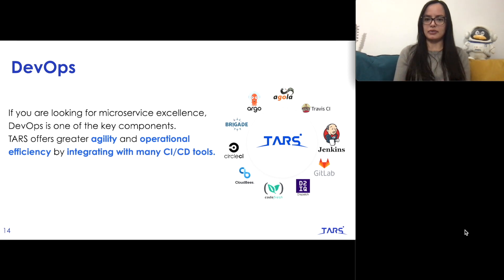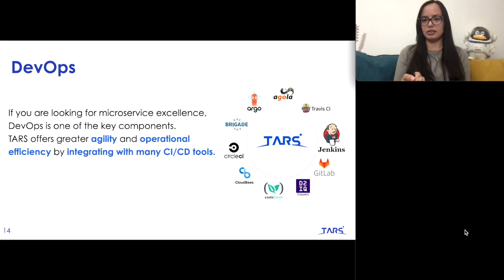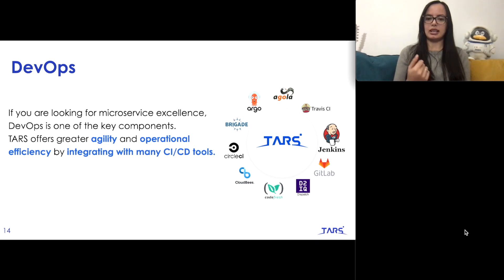TARS also provides support for DevOps. If you're looking for continuous development, continuous integration, operational efficiency, and fast releases, TARS can help you. It provides different tools that you can use, such as Jenkins, Travis CI, and GitLab.